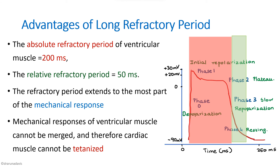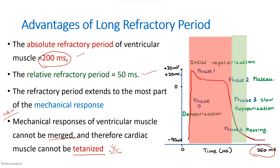The absolute refractory period of ventricular muscle is around 200 milliseconds out of a total duration of 250 milliseconds, while the relative refractory period is the remaining 50 milliseconds. The refractory period extends through most of the mechanical response. Because of this, the mechanical responses of ventricular muscles cannot be merged, and therefore the cardiac muscle cannot be tetanized. This is the most important advantage of the long refractory period.